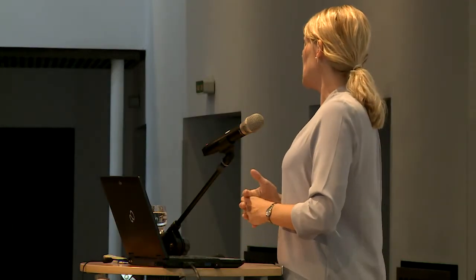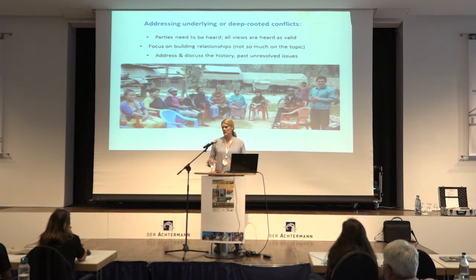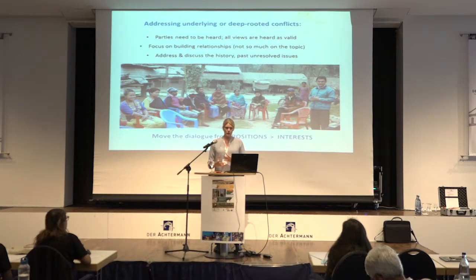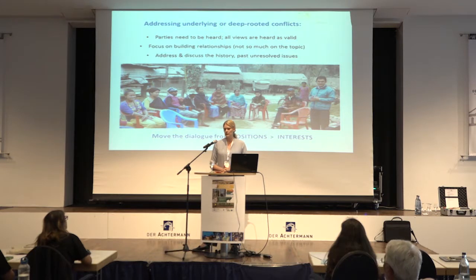If you have deep-rooted conflicts, you often need a third party — an impartial outsider — who will have a process for opening things up. They will make sure all parties are heard and that their views are considered valid. They will focus on relationships, might completely avoid talking about the animal, and will very carefully look at the history and address unresolved issues. They're trying to take people away from entrenched positions. Once you get people talking about what really matters to them, you have a possibility for dialogue and progress.